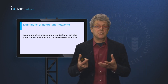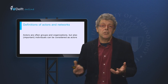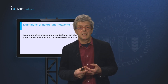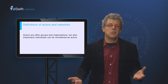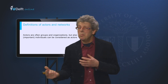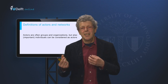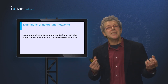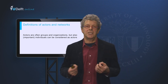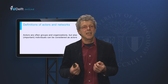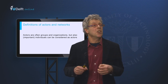Governments, for instance, need the private sector to implement effective policies, and the private sector needs the government for regulating the markets they are operating in. But often we are not aware of the networks we are operating in — the social fabric of the company or organisation we are working in, the people inside and outside our organisation we need to get things done. But if you make these linkages and dependencies explicit, you can use the power and means of the people and organisations in your network to get things done, and you can think about strategies to prevent other actors with different objectives from obstructing your plans.